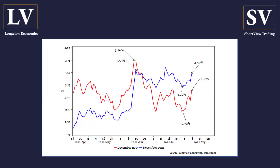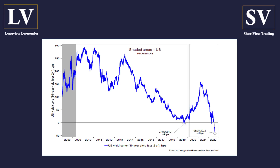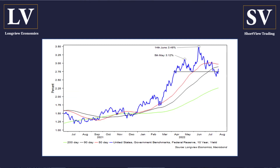There are some signs that liquidity in markets is beginning to tighten up. If we look at the rates market, we brought forward the timing of Fed hikes somewhat for the December 22 meeting, with Fed funds rising 18 bps on Friday. The yield curve inverted further, two-tens closing at minus 41 bps, and the US 10-year yield moving back up above its key technical level.